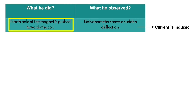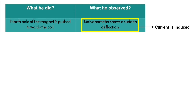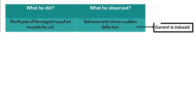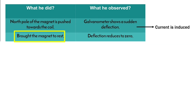In the first column we will consider what he did, and in the second column what he observed. When he pushed the north pole of the bar magnet towards the coil, the galvanometer showed a sudden deflection, indicating that a current is induced in the coil. When he brought the bar magnet to rest, the deflection reduced to zero — there is no deflection when the bar magnet is held stationary.